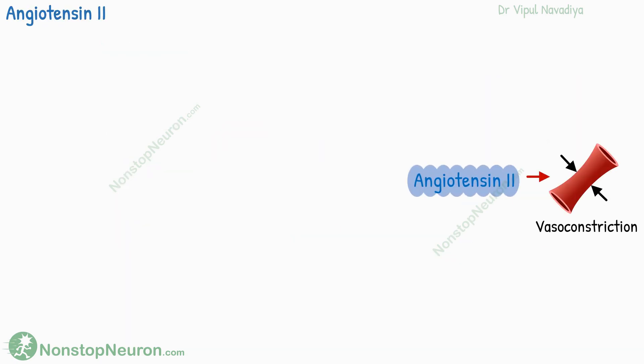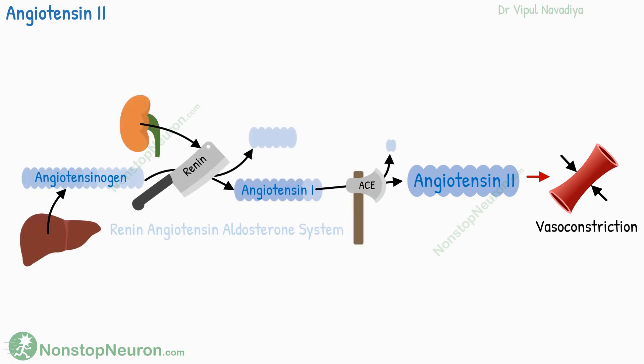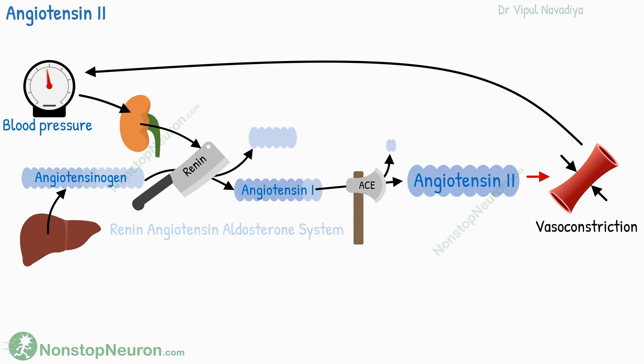Next is angiotensin II. This one is also a powerful vasoconstrictor. It is synthesized as a part of the renin-angiotensin-aldosterone system when blood pressure is decreased. It causes constriction of arterioles, which contributes to raising the blood pressure.